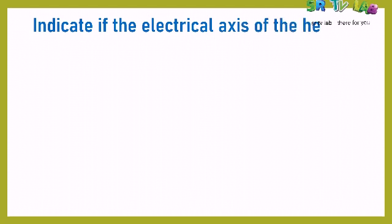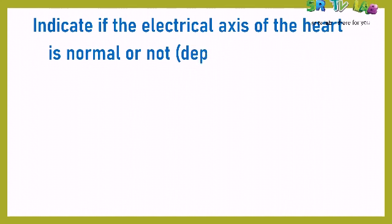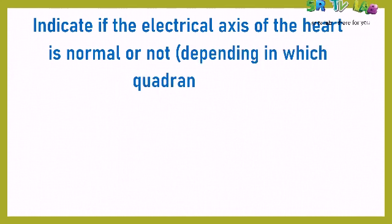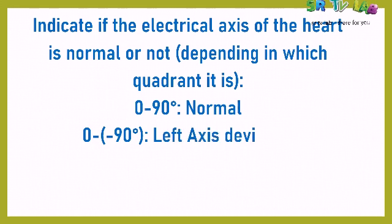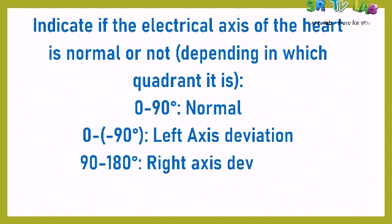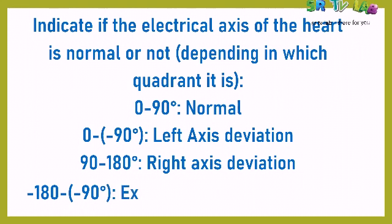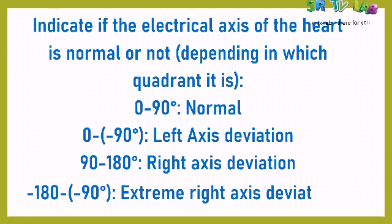To conclude, you have to indicate if the electrical axis of the heart is normal or not. Depending on which quadrant it falls in: 0° to 90° is normal; 0° to −90° is left axis deviation; 90° to 180° is right axis deviation; and −90° to −180° is extreme right axis deviation.